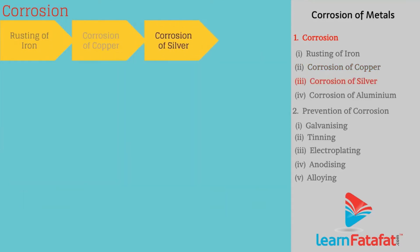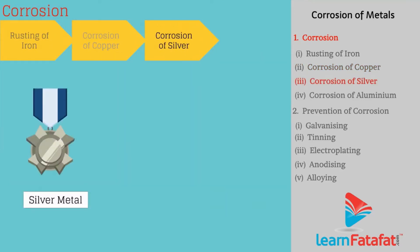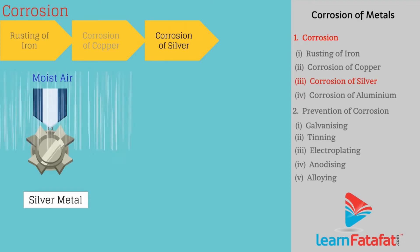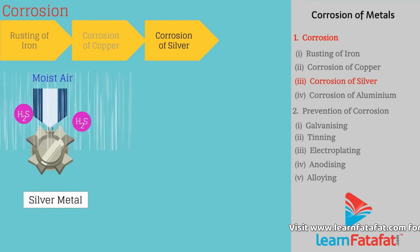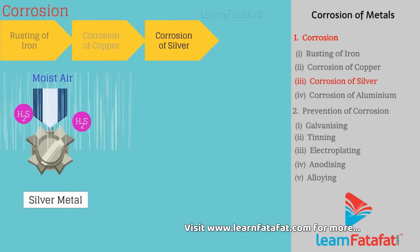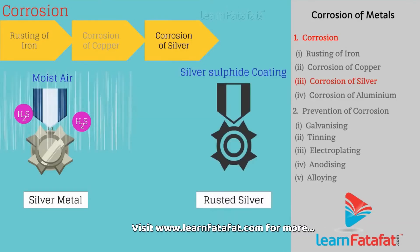Corrosion of Silver: When silver articles are exposed to air for a long time, they react with hydrogen sulfide present in air and form a black coating of silver sulfide on the surface.